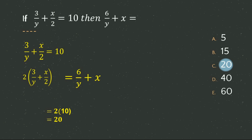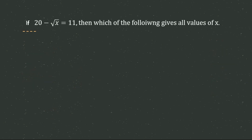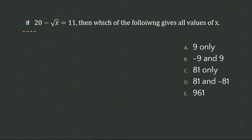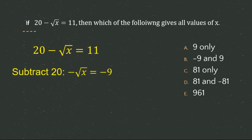The second question: √20 − √x = 11. Which of the following gives all values of x? If you subtract 20 from both sides, you get −√x = −9. The negative signs cancel, so √x = 9. Taking the square of both sides, x = 81. This is the only value, so C option, which is 81 only, is the correct answer.